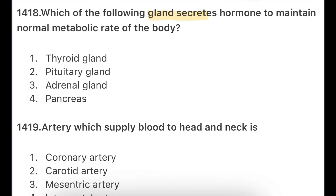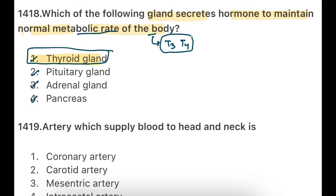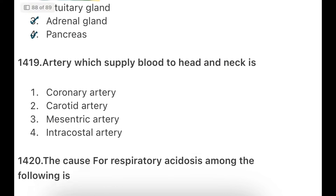Next: Which of the following glands secretes hormones to maintain the normal metabolic rate of the body? Options: thyroid gland, pituitary gland, adrenal gland, or pancreas. To maintain metabolic rate, T3 and T4 are needed — these are released from the thyroid gland. T3 (triiodothyronine) and T4 (thyroxine) both help maintain basal metabolic rate, aid digestion, maintain heart rate, and regulate body temperature.